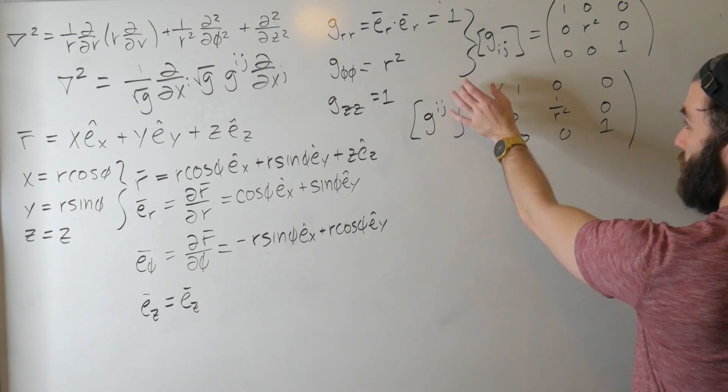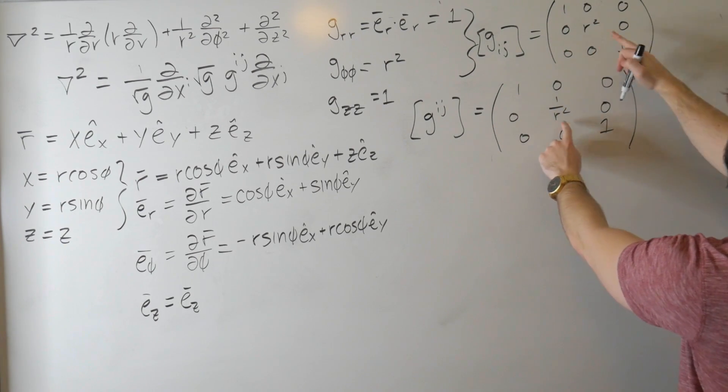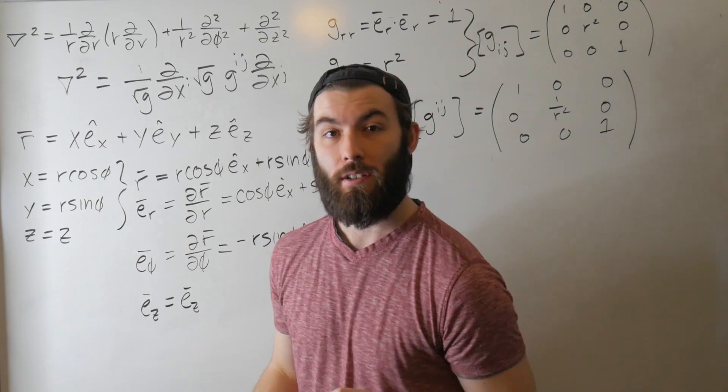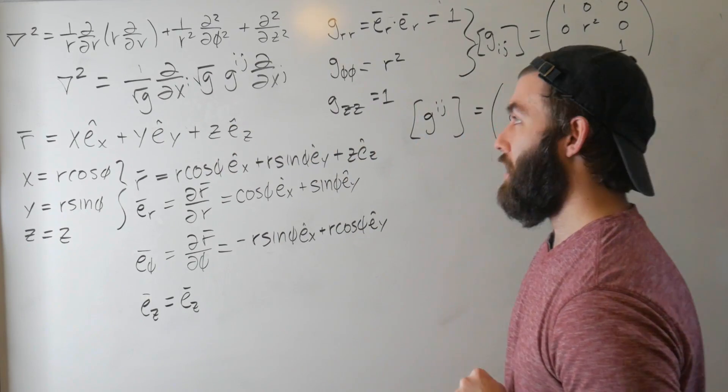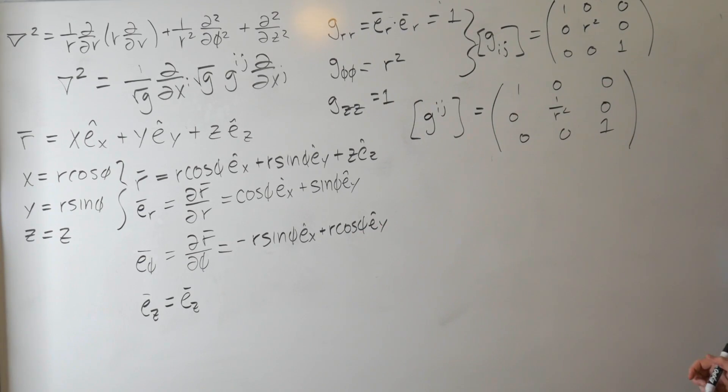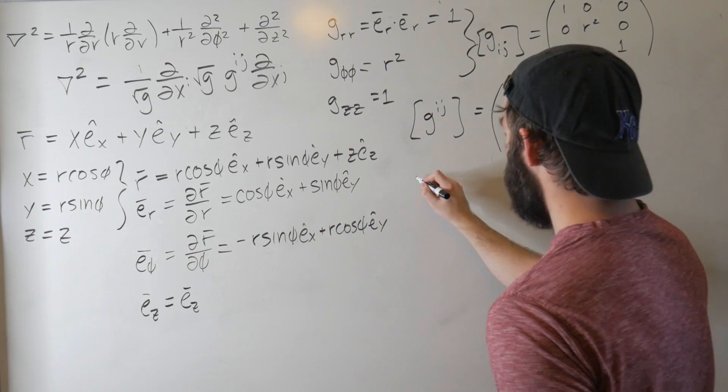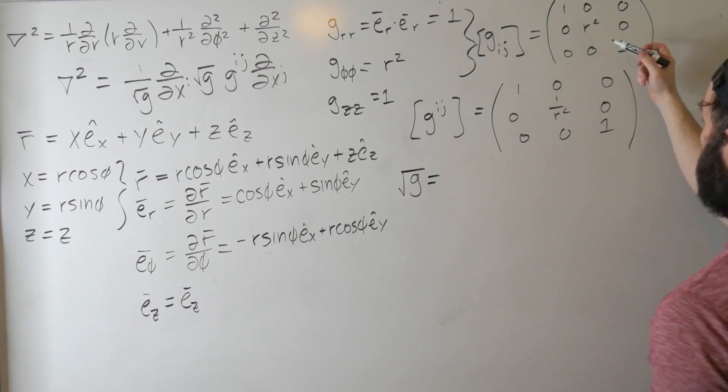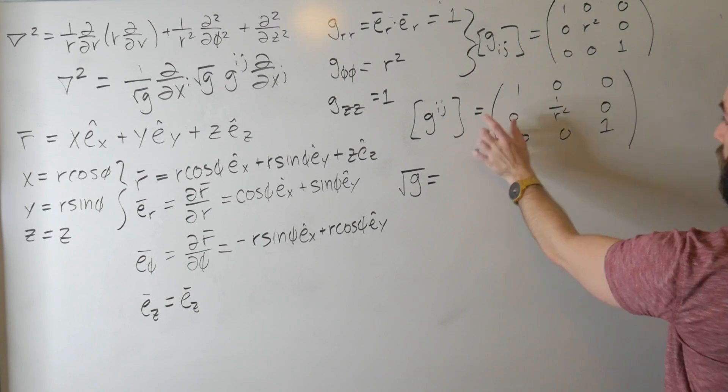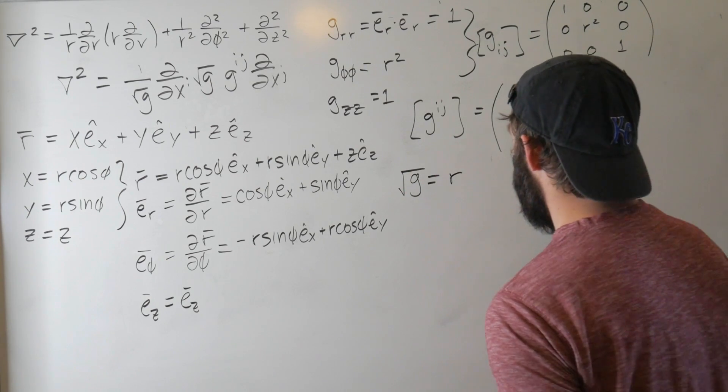All this means is if you multiply these two matrices together, you get the identity matrix, and that's pretty easy to see. The last thing that we have to calculate before we can finally start plugging stuff into this equation is this root g. Root g, well g in general, is the determinant of the metric tensor, and since we have a diagonal matrix here, the determinant of the metric tensor is just the product of its diagonal components. So root g is the determinant of the covariant metric tensor. We've got one times r squared times one, and then we're taking the square root of it, that's going to give us r.